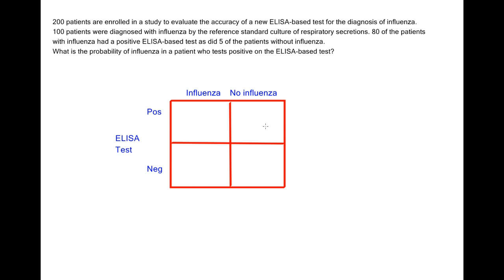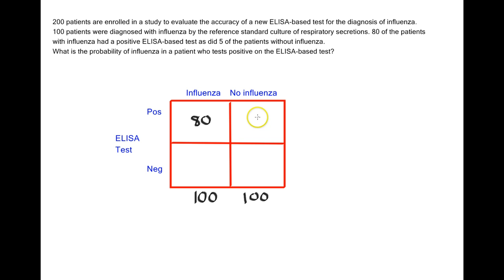So let's work on calculating the post-test probability of a patient with a positive test. There were 200 patients enrolled in this study and 100 of them had influenza, so I put 100 down at the bottom. Because there were 200 total patients, everything has to add up, so I'd have 100 people without influenza. 80 of the patients with influenza had a positive ELISA-based test, so 80 goes in this box. Five of the people without influenza had a positive ELISA-based test, so five goes in that box. Everything else adds up: 95 in this box and 20 in this box.